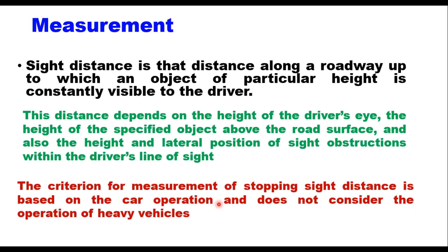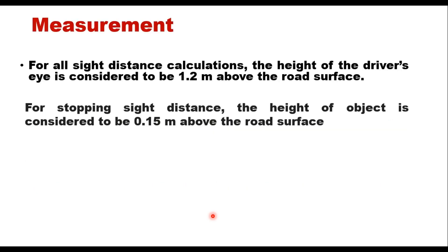The criteria does not consider the operation of heavy vehicles. Heavy vehicles in general require longer sight distance to stop; however, this is balanced by the fact that heavy vehicle drivers are able to see much farther due to their higher position compared to the driver of a car. Therefore, separate sight distances are not considered for cars and heavy vehicles. For all sight distance calculations, the height of the driver's eye is considered to be 1.2 meters above the road surface.